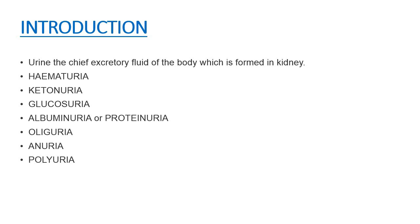The abnormal constituents of urine and changes in the physical properties of urine like volume, color, odor, and specific gravity can signify various disease conditions. Today we are going to discuss how, using various chemical tests, we can determine the abnormal constituents, since their presence can indicate various disease conditions.